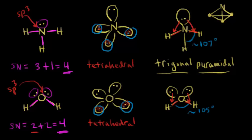Thinking about the molecular geometry, or the shape of the water molecule, we actually call this bent or angular. Because you ignore the lone pairs of electrons, you're left with the oxygen and this angle — so bent or angular molecular geometry. These are three examples where the central atom in all three molecules is sp3 hybridized. This is one way to figure out your overall molecular geometry, think about bond angles, and understand how hybrid orbitals affect the structure of these molecules.